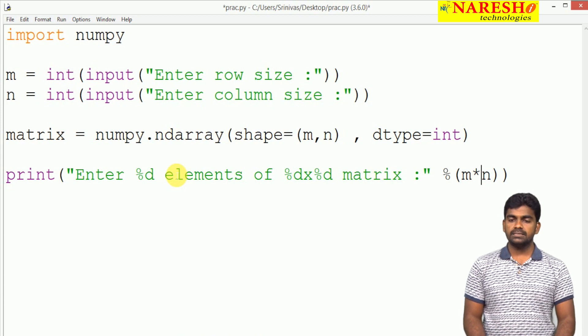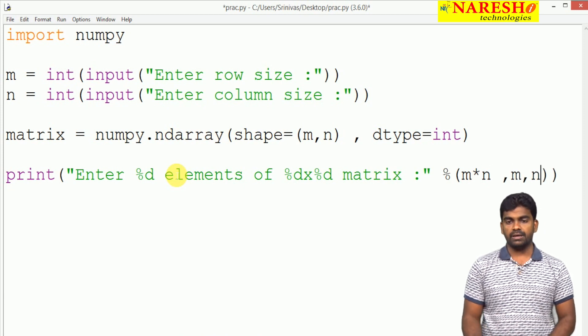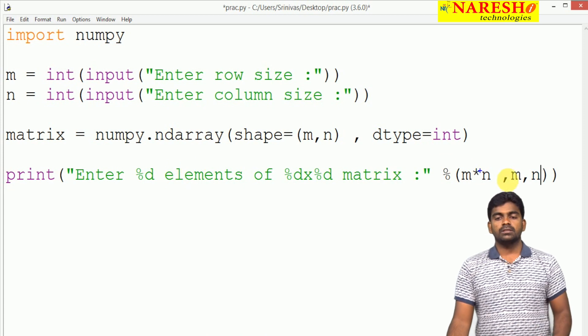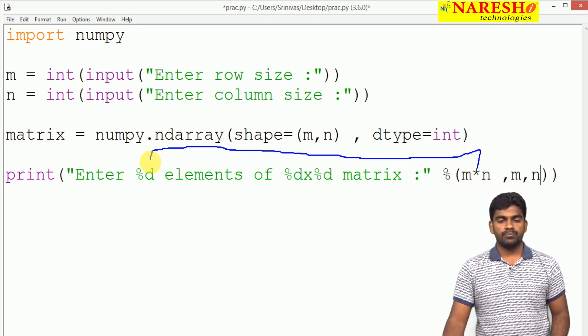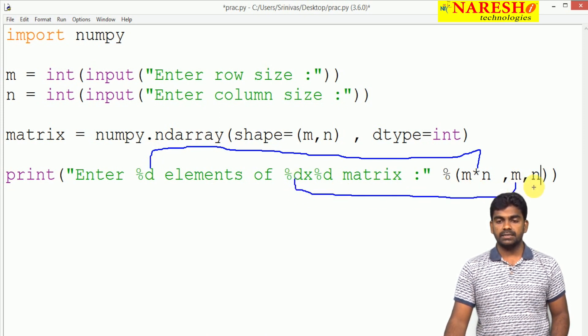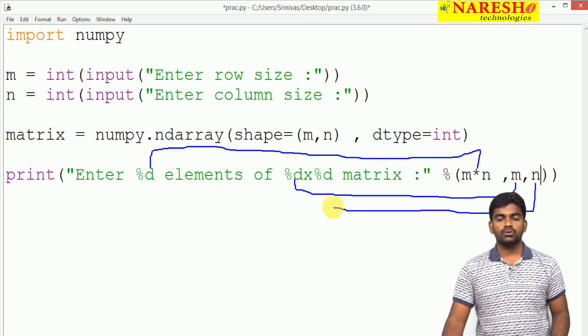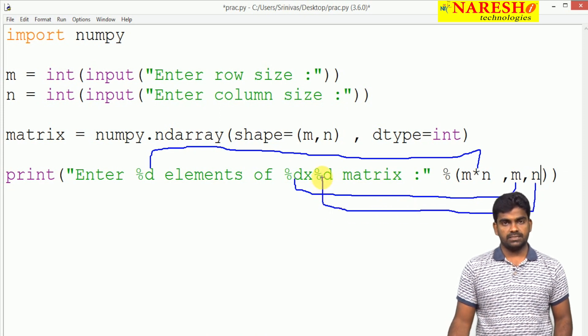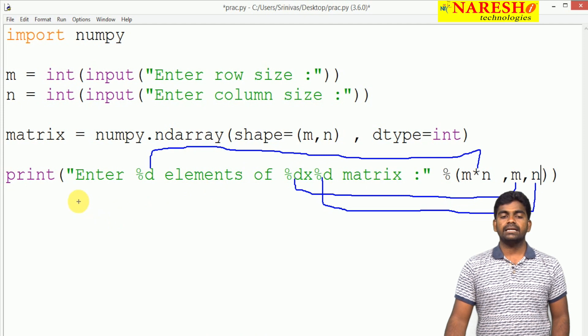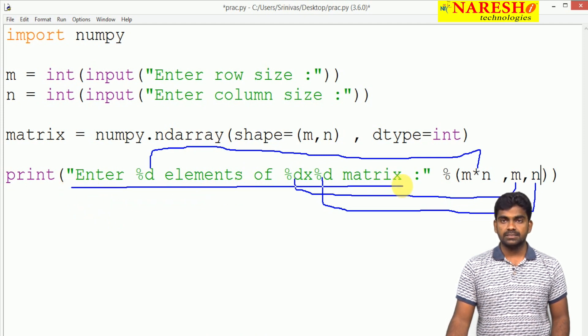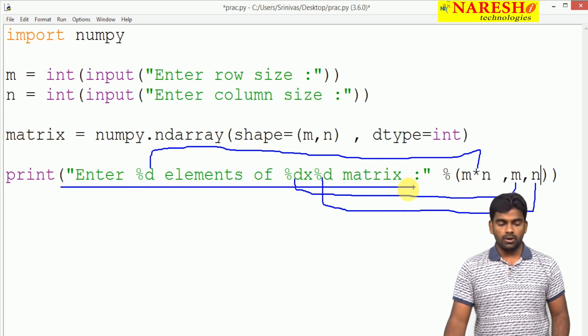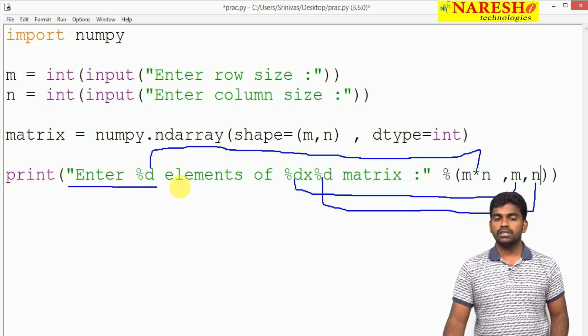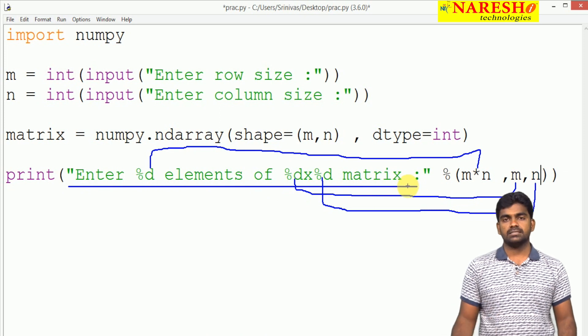Here in this place we need to write m comma n value. The first value m times n will store here. And next, m value will store in the second place of percentage d, n value will store in the third place. Like clearly enter 9 elements of 3 by 3 matrix or enter 6 elements of 2 by 3 matrix. This will ask the message clearly.